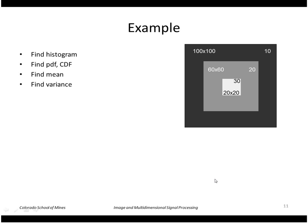Okay, let's do an example of finding a histogram of a simple image. Let's say we have a 100 by 100 image. The values in black here have the value 10. This inner square, which is 60 by 60, has the value 20, and this very most inner square, which is 20 by 20, has the value 30.